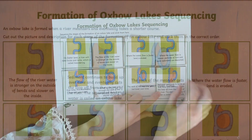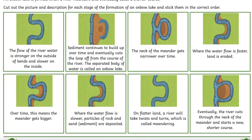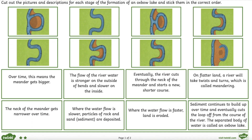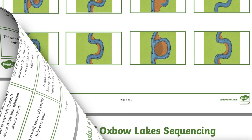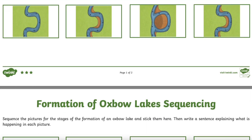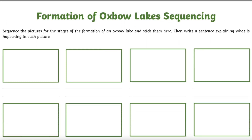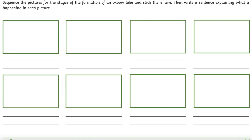In the one-star version, pupils order the events. In the two-star version, they must match the words and images before ordering. And in the hardest, three-star version, children order the images and write the accompanying text themselves.